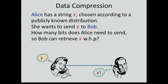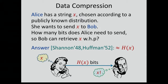This is the starting point of our paper. We talk about data compression. What is data compression? We're assuming that we have two players, Alice and Bob. Alice knows some string x, chosen according to a distribution that is known to both Alice and Bob, and she just wants to send this message, the string x, to Bob.